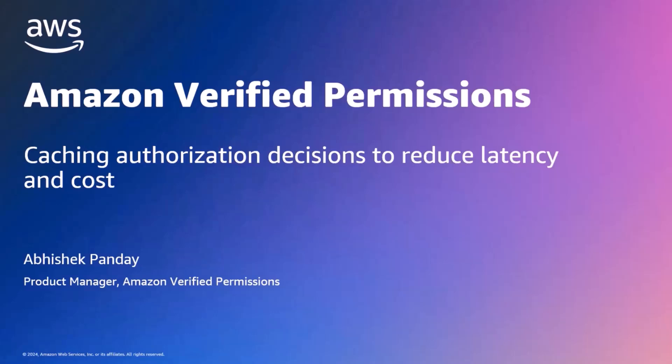Hi, my name is Abhishek Pandey and I'm a Product Manager at AWS. In the previous videos of this series, we learned how we can use Amazon Verified Permissions to secure API Gateway APIs based on user groups and attributes. Today we will learn how you can use caching, more specifically decision caching, to reduce latency and cost.